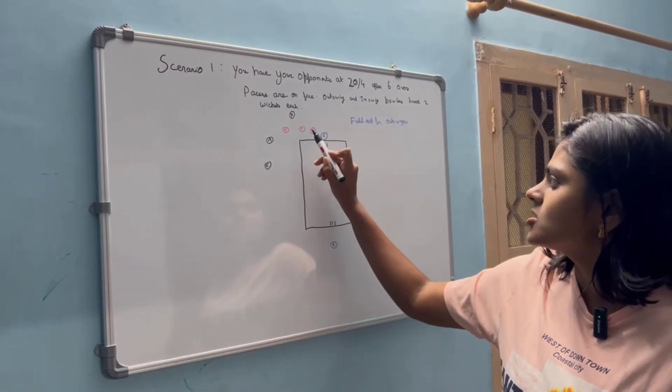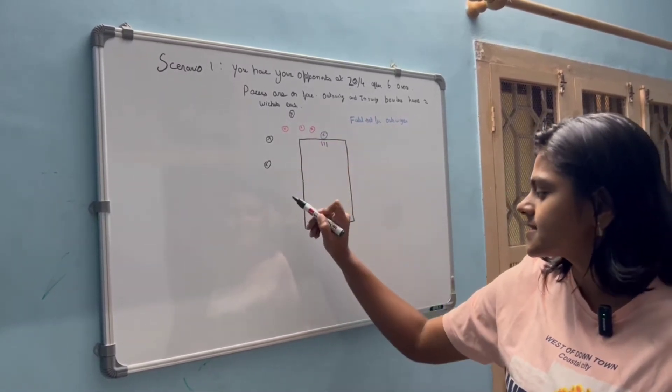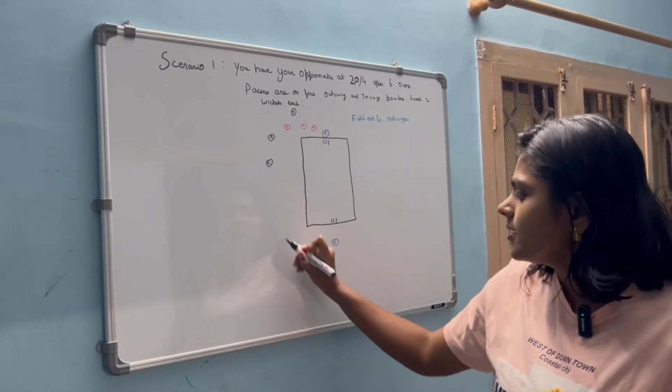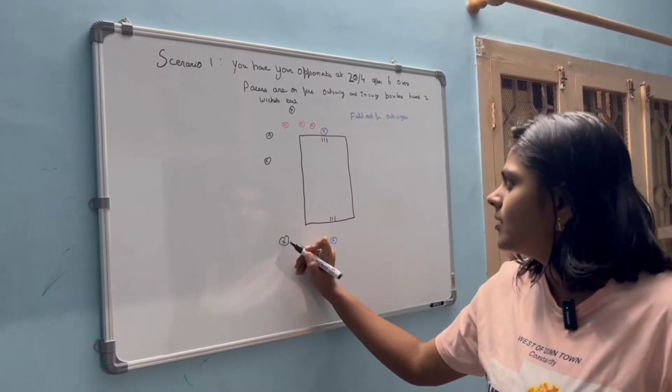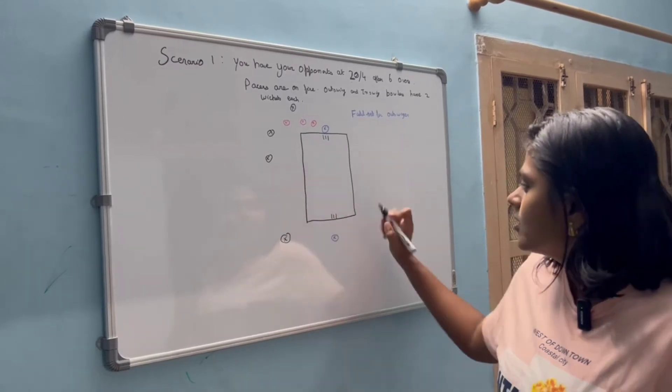So this comes up to 1, 2, 3, 4, 5, 6. I will have a mid-off, I will have a mid-on.